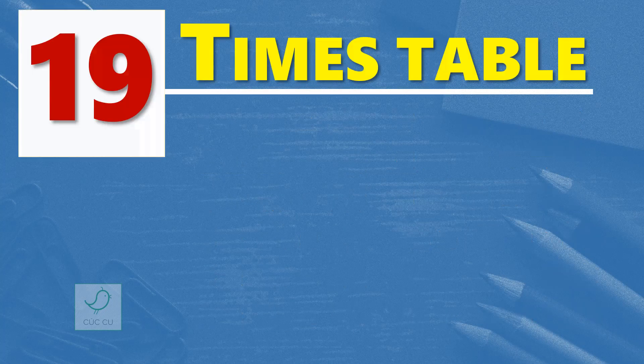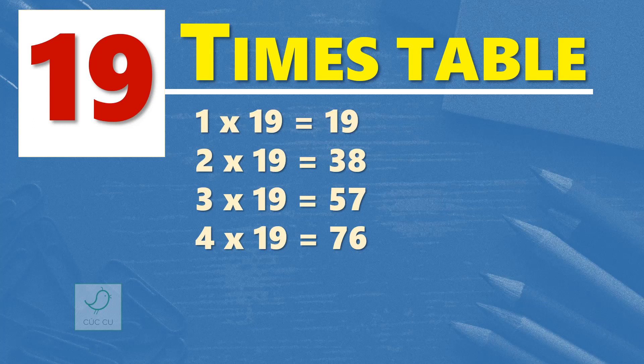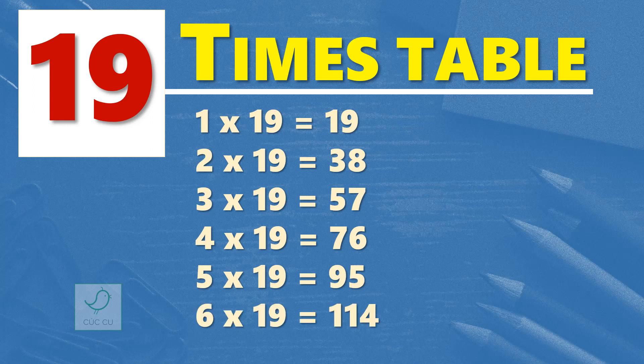19 times table. One time 19 is 19. Two times 19 are 38. Three times 19 are 57. Four times 19 are 76. Five times 19 are 95. Six times 19 are 114. Seven times 19 are 133. Eight times 19 are 152.